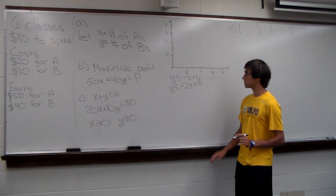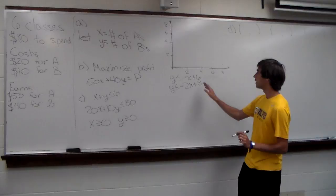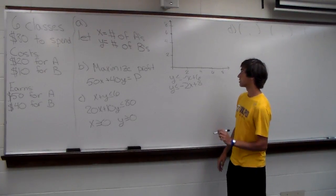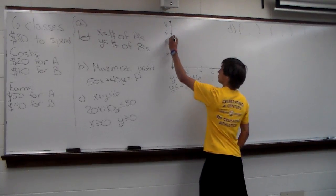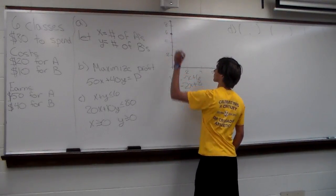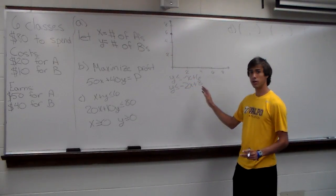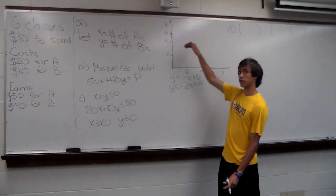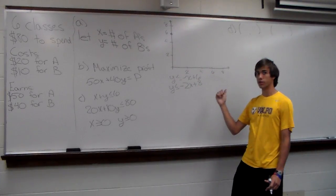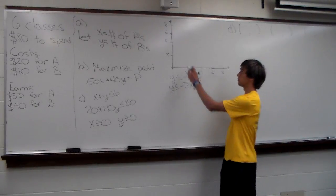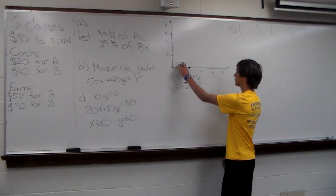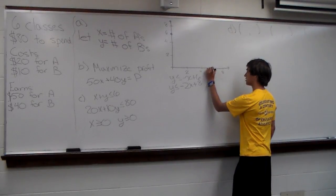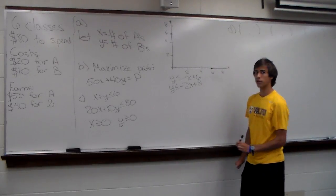Now we'll graph both inequalities. For the first one, the Y-intercept is at 6 and the slope is -1. A slope of -1 means for every unit we move down, we move one unit to the right. So moving down 6 units and right 6 units gives us the point (6, 0) also on that line.